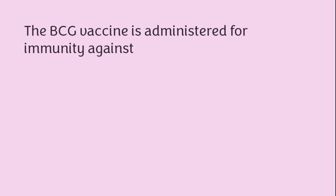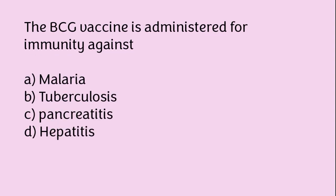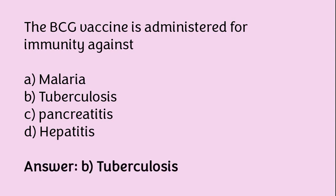The BCG vaccine is administered for immunity against: malaria, tuberculosis, pancreatitis, or hepatitis? The correct answer is option B. The BCG vaccine is administered for immunity against tuberculosis.